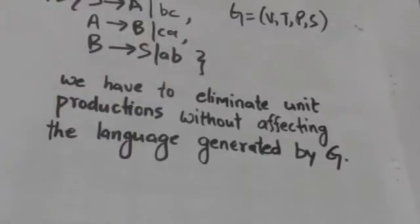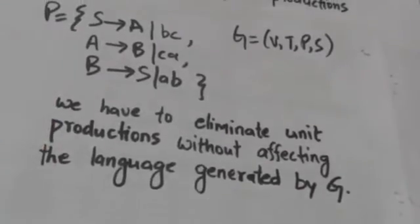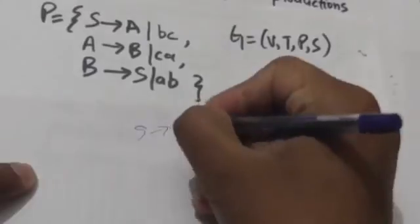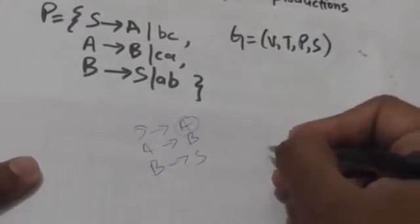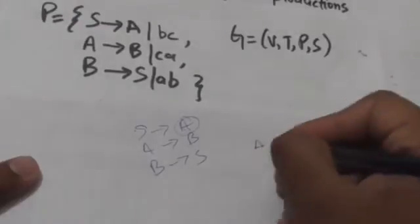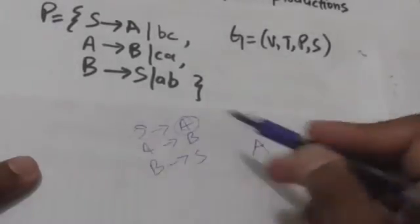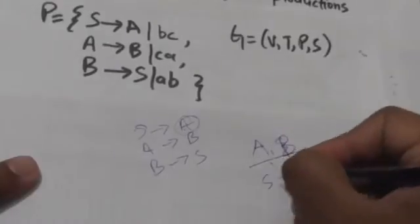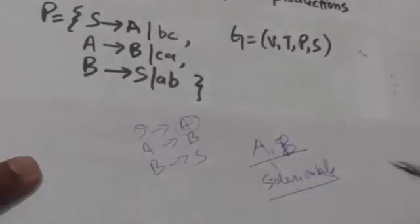First, identify the unit productions: S derives A, A derives B, and B derives S. Since S derives A, A is S-derivable. Since A is S-derivable and A derives B, B is also S-derivable. So variables A and B are S-derivable.